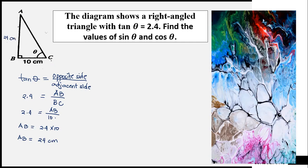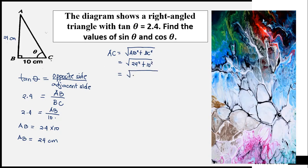To get line AC, we need to apply the Pythagorean theorem. AC is equal to the square root of AB squared plus BC squared. AB has a measurement of 24, so 24 squared; BC has a measurement of 10, so 10 squared. 24 squared equals 576, and 10 squared equals 100. Adding the two gives 676.